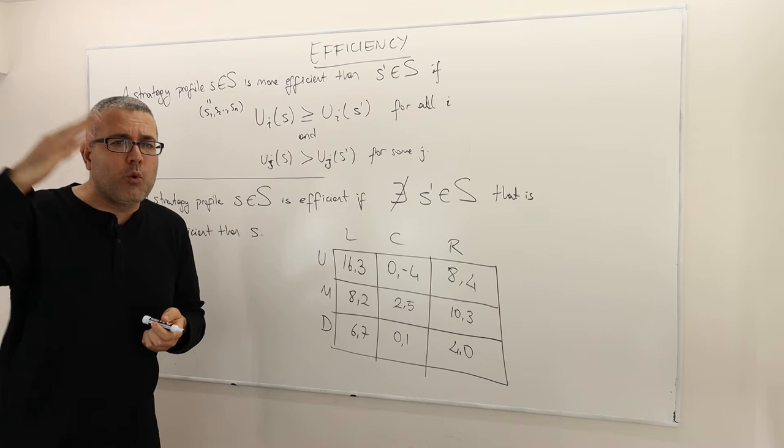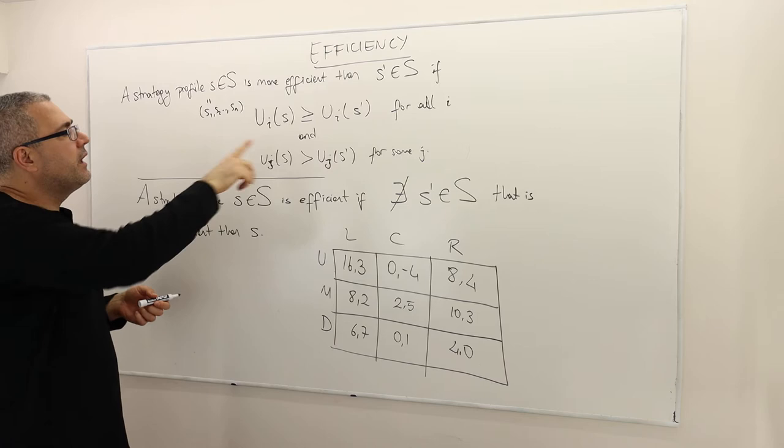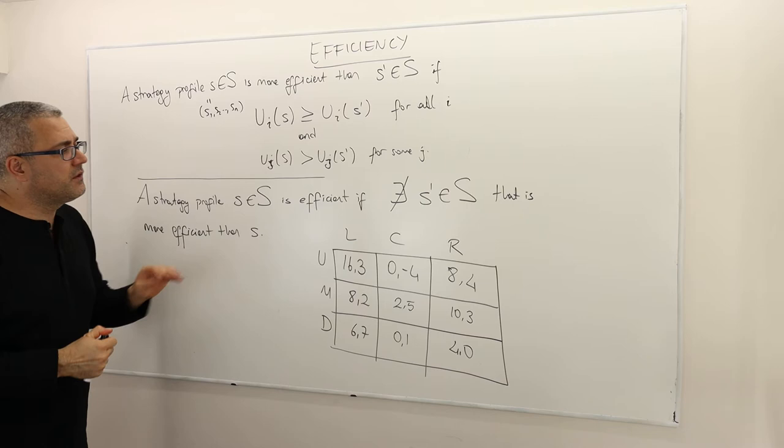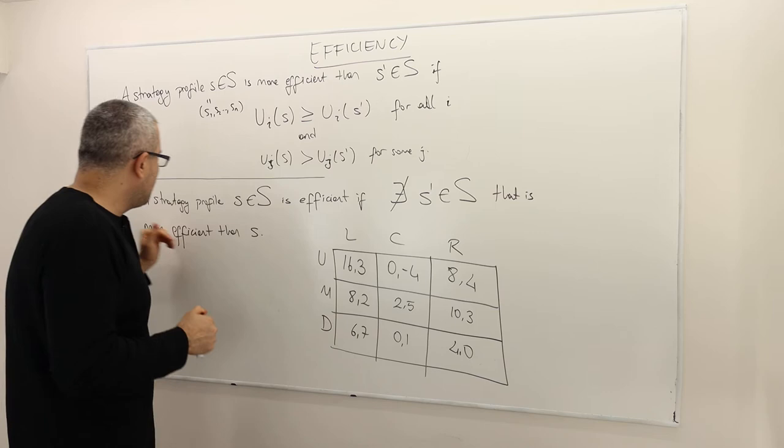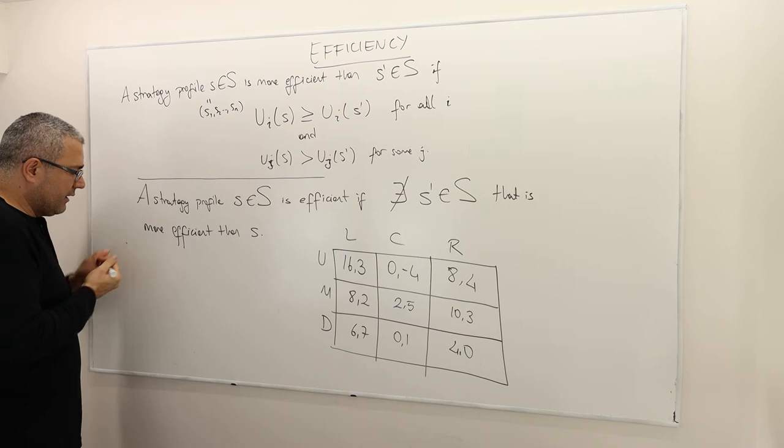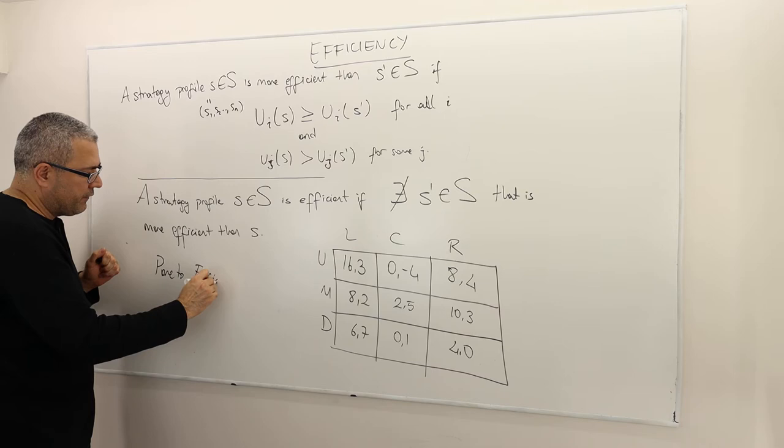Basically, everybody's situation, payoff-wise, will be weakly improved if they move from S prime to S. A strategy profile S is called efficient if there exists no other strategy profile that is more efficient than S. As simple as this — this is nothing but Pareto efficiency, the standard efficiency concept.